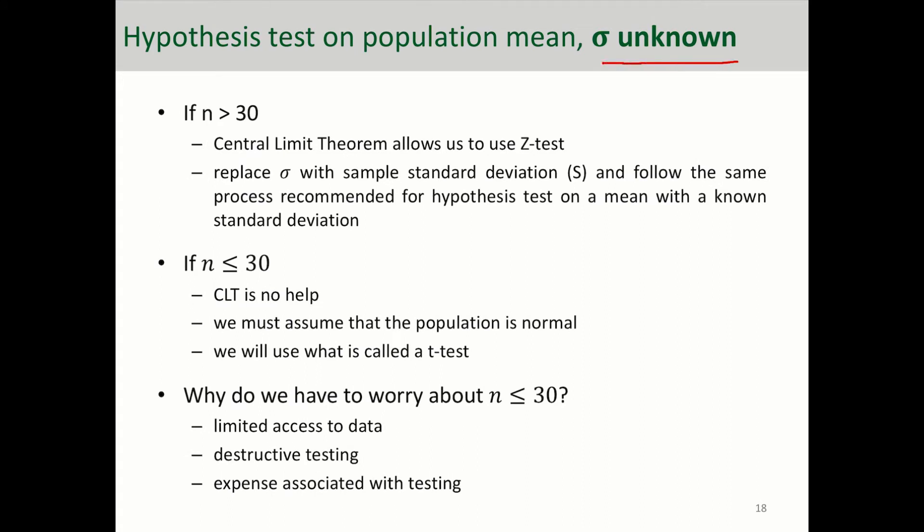So if the standard deviation is unknown, and we're testing on population mean, which is the mu. Two situations can happen.